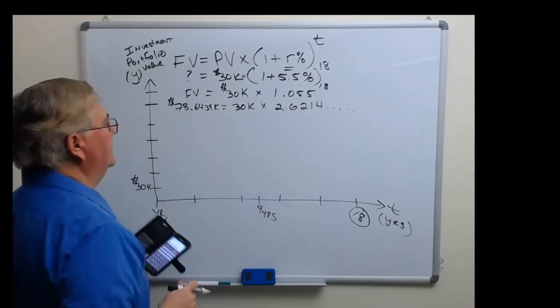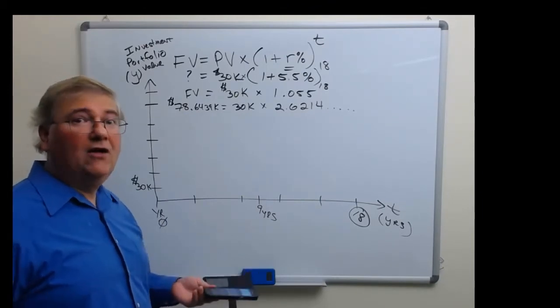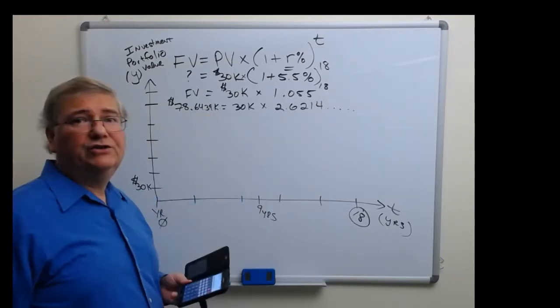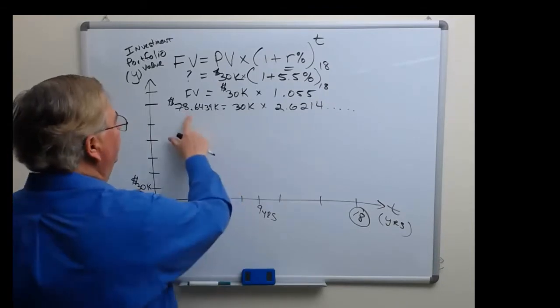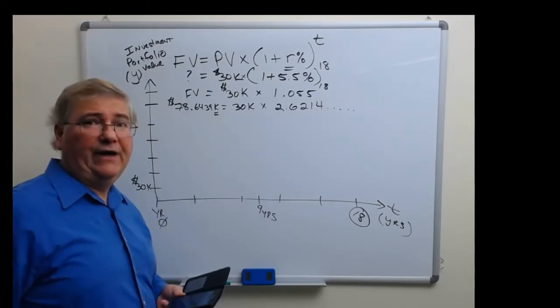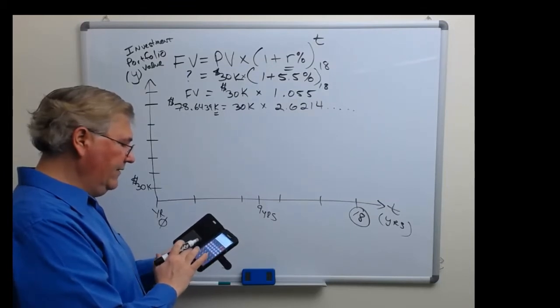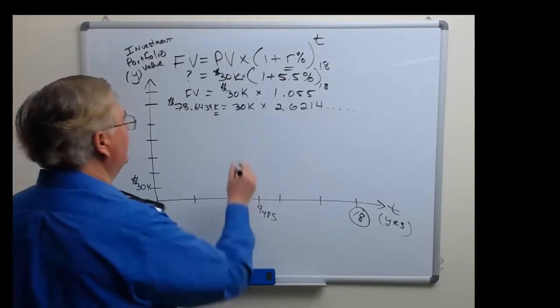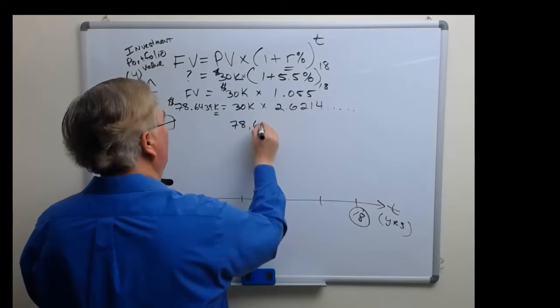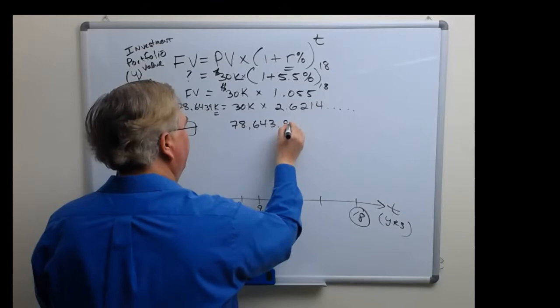Now you could write this as your answer, but it'd be nice to convert this to actual dollars and cents. So to convert 78.6439k to regular dollars and cents, multiply this by 1000 because k is representing a thousand dollars. So 78.6439 times 1000 is equal to a future value of seventy-eight thousand six hundred forty-three dollars and ninety-nine cents.